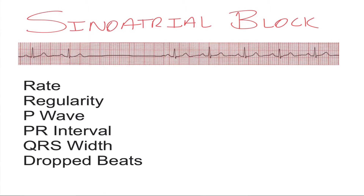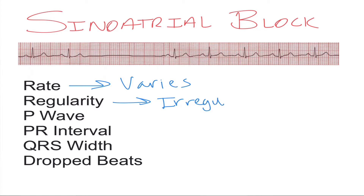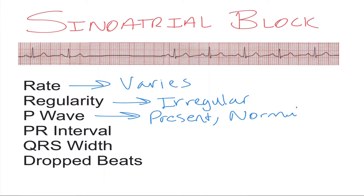For this video we're going to look at something called sinoatrial block. With a sinoatrial block, you're going to have a rate that varies and it will be an irregular rhythm. The P waves will be present and normal, and the PR interval will be normal as well as the QRS width.